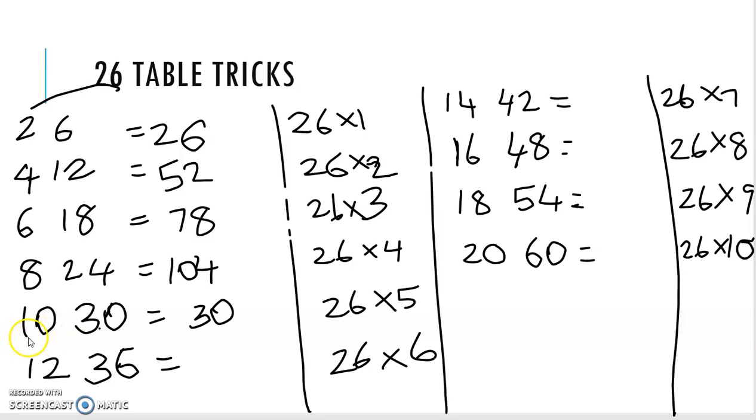Then here 1 digit number 6. We have to write 1 digit number 6. Then this 2 plus 3. We get 5. Then this 1. 156.